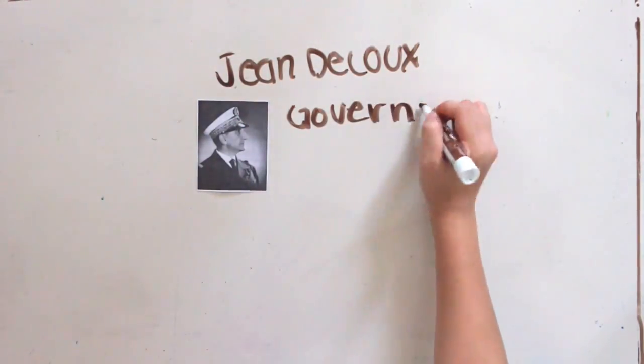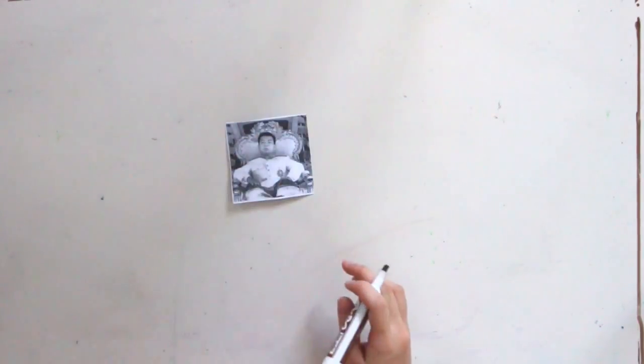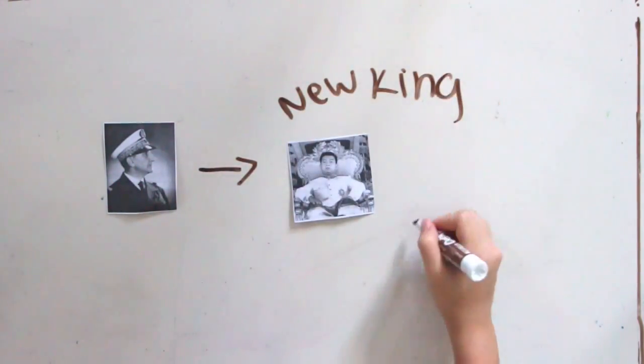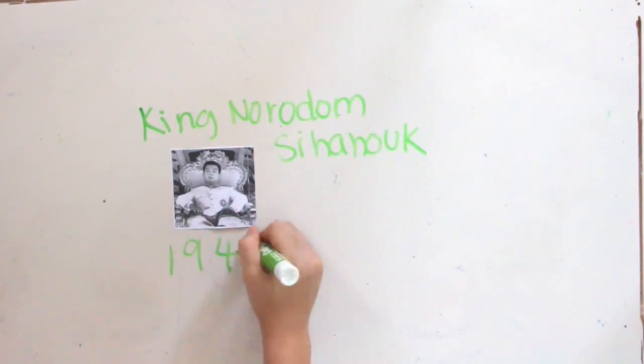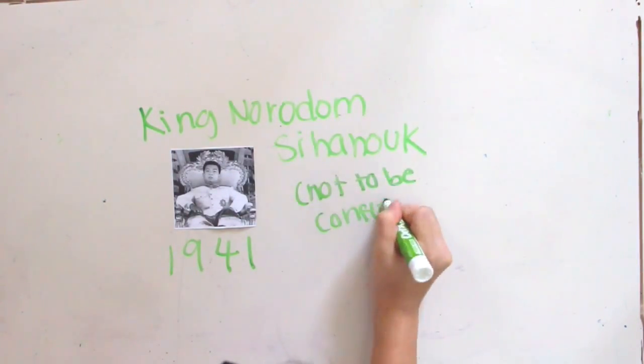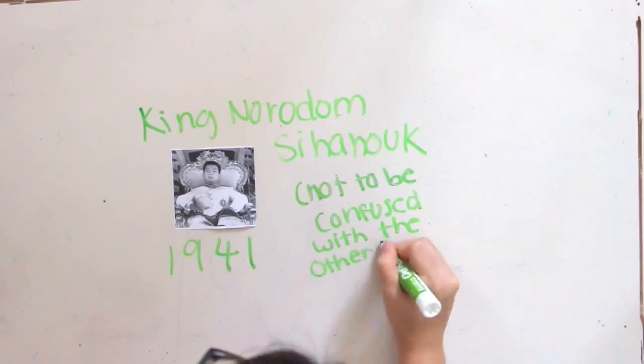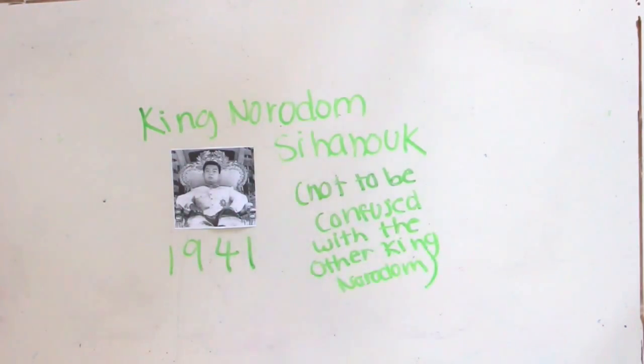Jean Decoux, who was the Indochina governor-general, selected King Norodom Sihanouk as a new Cambodian ruler, in hopes to manipulate the young, inexperienced king. King Norodom Sihanouk was crowned in 1941, not to be confused with the other King Norodom we mentioned.